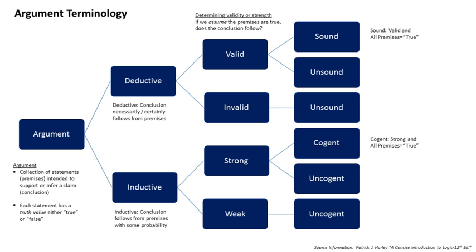Modus tollens, also known as the law of contrapositive, is a deductive rule of inference. It validates an argument that has as premises a conditional statement P → Q and the negation of the consequent ¬Q, and as conclusion the negation of the antecedent ¬P. In contrast to modus ponens, reasoning with modus tollens goes in the opposite direction to that of the conditional.